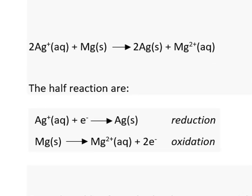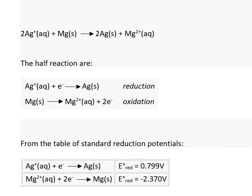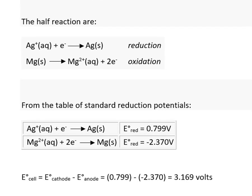Here we will calculate the cell potential under standard conditions for the silver ion reacting with magnesium metal. Here are the two half reactions and the respective reduction half potentials. After substituting these reduction potentials into the equation E°cell equals E°cathode minus E°anode, we end up with a very positive E°cell voltage.